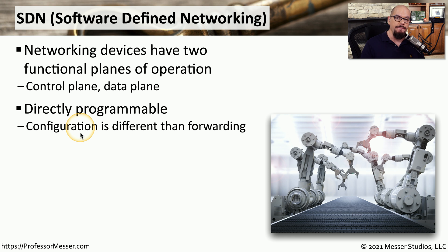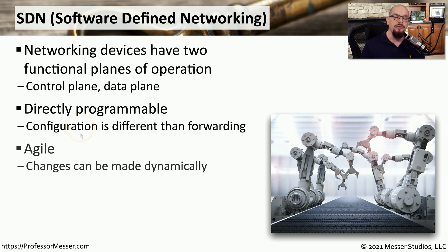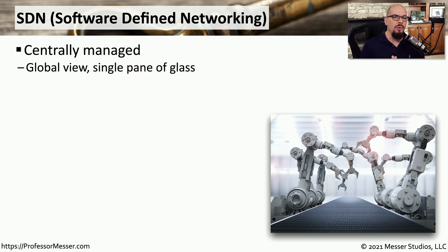This allows you to separate the functionality of these devices into separate planes of operation, and it allows you to configure the device without affecting what's being forwarded through that device. Another important characteristic of SDN is that it is agile, which means you can make changes dynamically at any time. This is especially important for cloud computing, since cloud computing application instances can change dramatically from moment to moment. It's also important that we're able to manage this SDN from one single point of view — we call this a single pane of glass, where we can sit at one management console and see the deployment for all of our SDN devices.